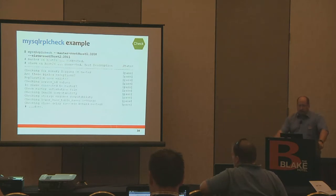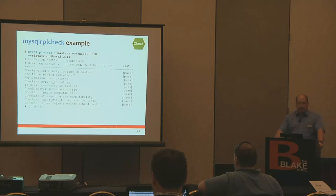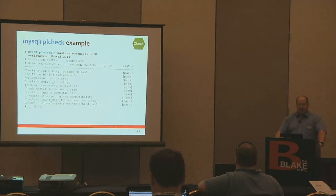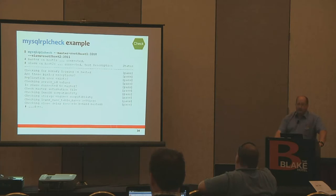Here's an example of RPL Check running. It runs as a series of tests and gives you a pass or fail. All the utilities support verbosity — you can use -vvv or --verbosity — and it will show you more information, including the binary log name and position on the master, exceptions, and so on.